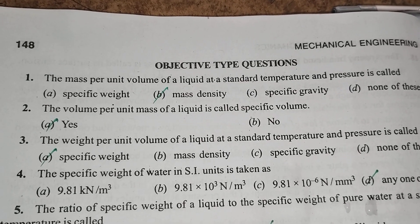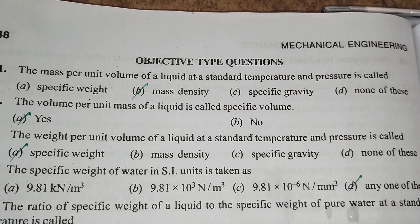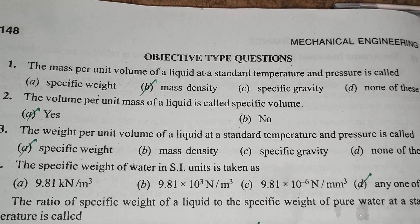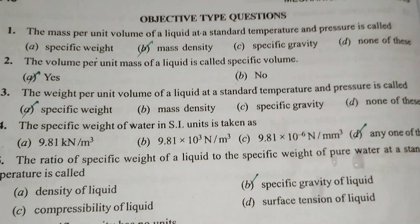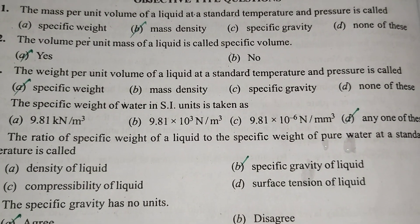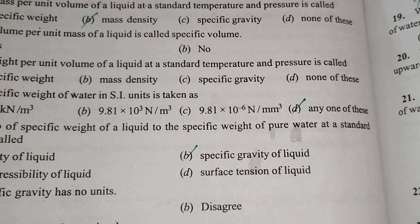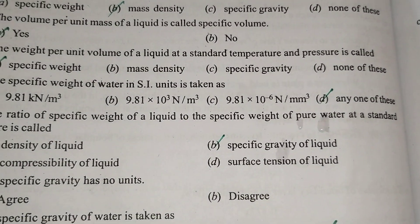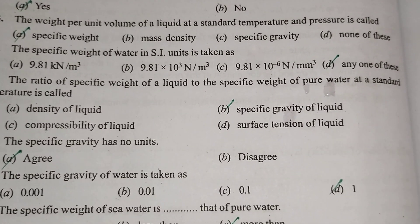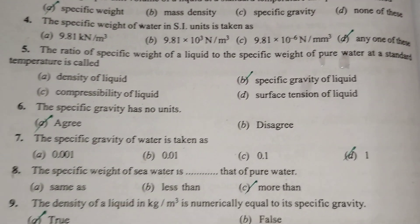The mass per unit volume of a liquid at standard temperature and pressure is called mass density. The volume per unit mass of a liquid is called specific volume. The weight per unit volume of a liquid at standard temperature and pressure is called specific weight. The ratio of the specific weight of a liquid to the specific weight of pure water at standard temperature is called specific gravity of liquid.